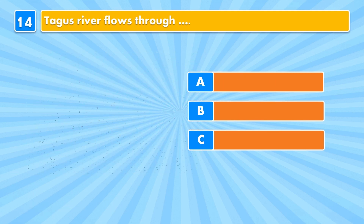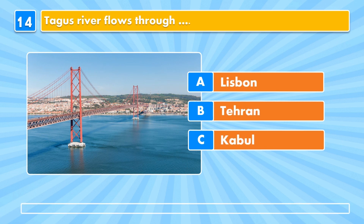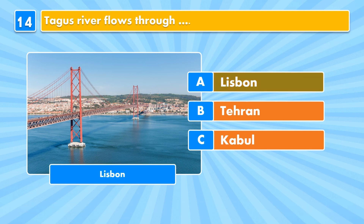Question fourteen: the Tagus River flows through Lisbon, Tehran, or Kabul? Answer: Lisbon.